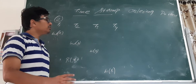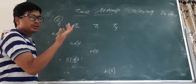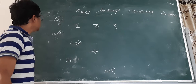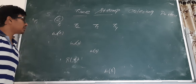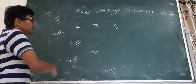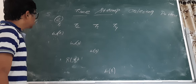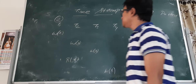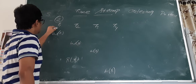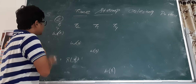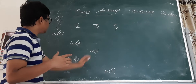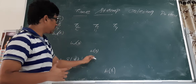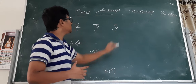Good morning students. In the earlier video we discussed the timestamp ordering protocol with one example. Now for better understanding let me discuss another example. They have given four transactions, and we need to check whether it is following the timestamp ordering protocol or not. The timestamp of t1 will be 9, t2 will be 10, t3 will be 11, and t4 will be 4.